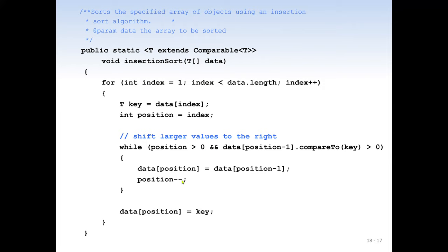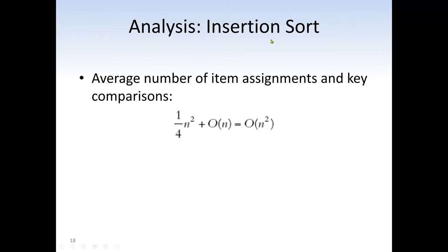We decrement position rather than increment because we're starting from the right and comparing while shifting. The insertion sort analysis shows the average number of item assignments and key comparisons is one quarter n² plus O(n). Since we have n², the time complexity is O(n²). That's why insertion sort is faster than selection sort in terms of number of comparisons, but both have the same O(n²) time complexity on average.